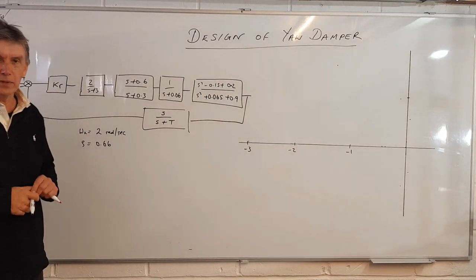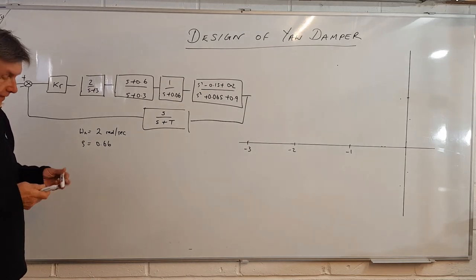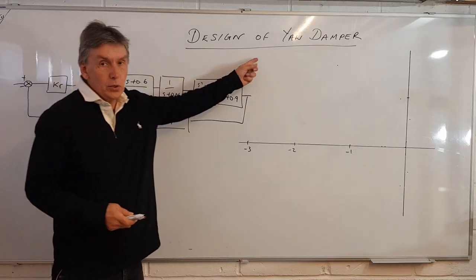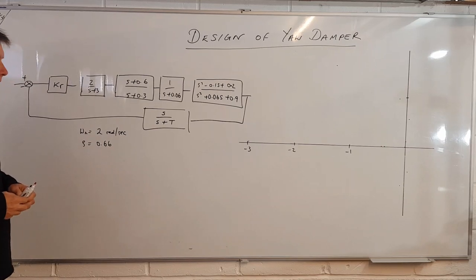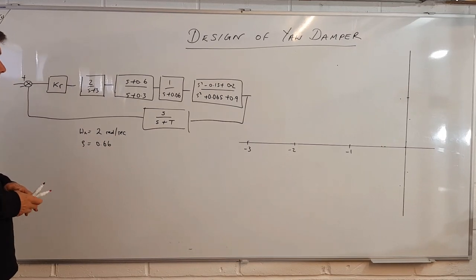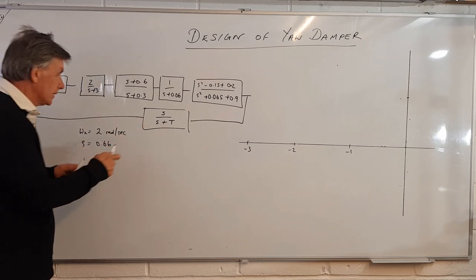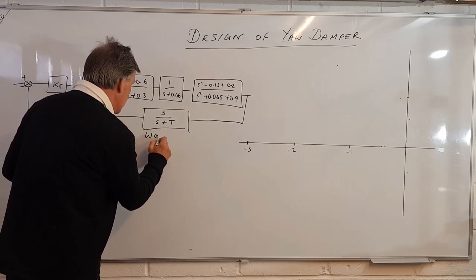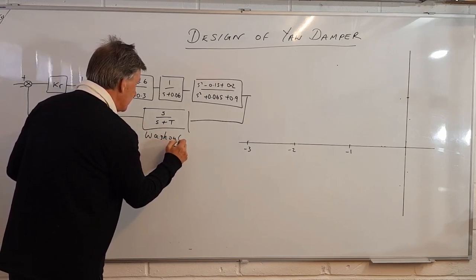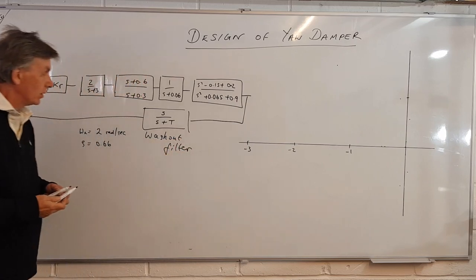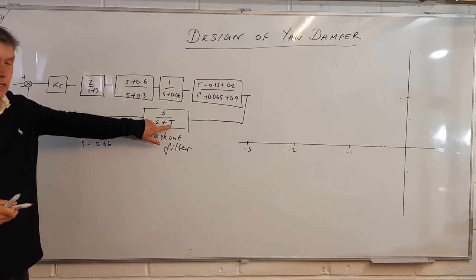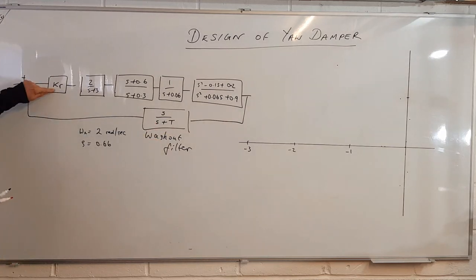Right, good afternoon. Today we're doing the design of a yaw damper. This is a fairly conventional design and it involves the design of what's called a washout filter. In the washout filter we have a parameter t that we're trying to find. We've also got a control loop gain kr to find at the same time.